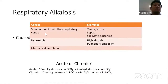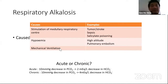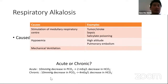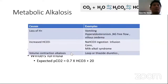Respiratory alkalosis can be caused by stimulation of the respiratory center from tumor, stroke, sepsis, salicylate poisoning, hypoxemia, high altitude, or mechanical over-ventilation. For compensation: acutely, every 10 mmHg decrease in PaCO2 decreases bicarbonate by 2 mEq/L; chronically, every 10 mmHg decrease reduces bicarbonate by 4 mEq/L.